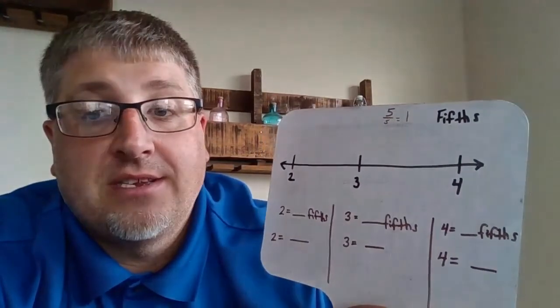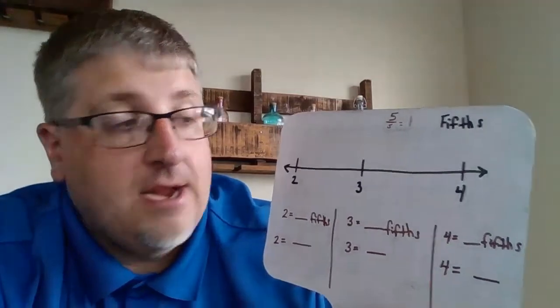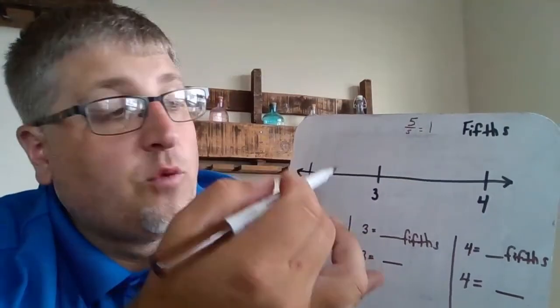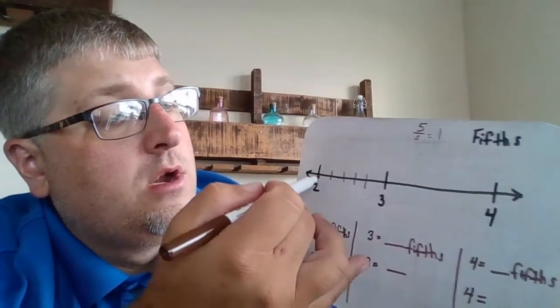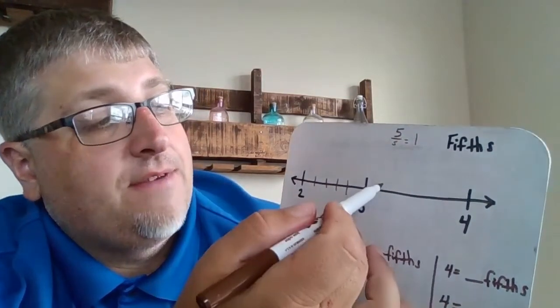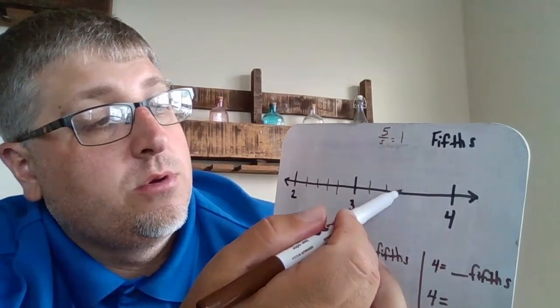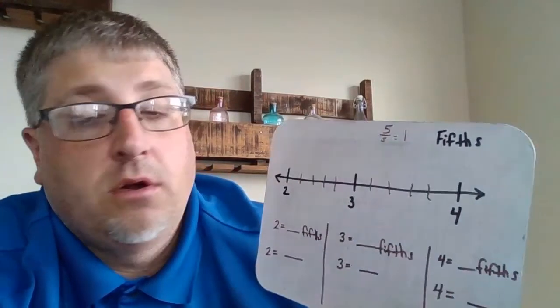So we're going to have to get to two. We're going to have to understand what the denominator is and what the numerator are going to be. But first, before we get into that, let's break this into fifths. So for fifths, I'm going to do four cuts. One, two, three, four. One, two, three, four, five. So I've got five pieces. One, two, three, four.